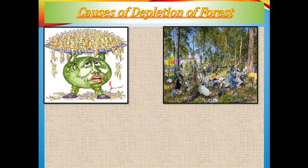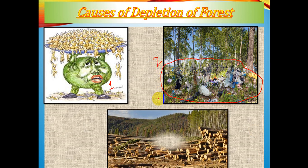The second cause is shown by a picture of forests littered with plastics and waste products. People visiting for recreation leave non-biodegradable plastics that damage tree roots and spoil forest cover. The third cause is lumbering — forests are continuously deforested for commercial utilization of logs and timber.